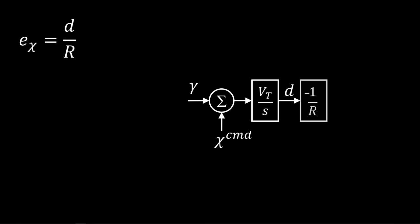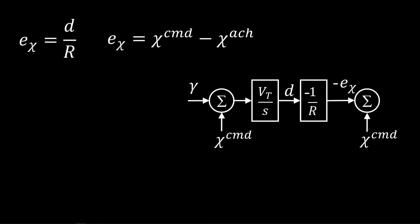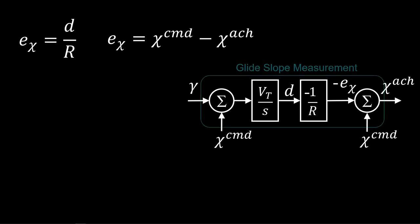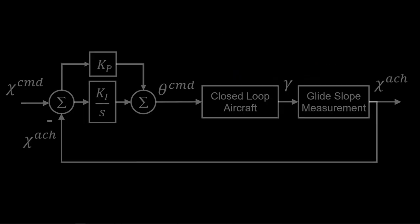Multiply D by minus 1 over R to get minus E, where error is glide slope command minus achieved. We add in glide slope command at a junction with minus E to get glide slope achieved. Now we have the model relating the aircraft state — specifically flight path angle — the commanded glide slope angle, and the output, the achieved glide slope angle. In our block diagram, we can bring in this detail.